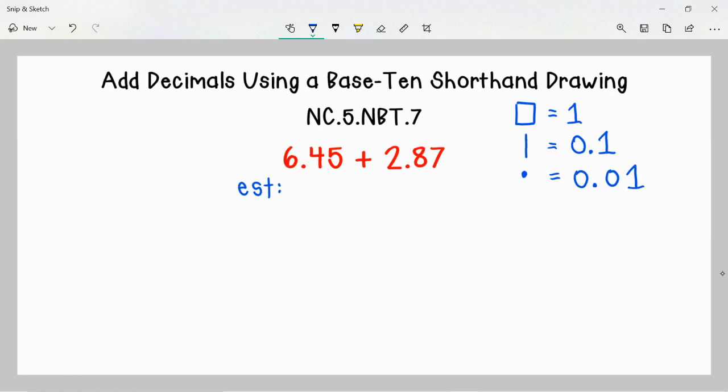We have 6.45. I'm going to round that to the nearest whole number since that would be friendly for me. You certainly could round it in a different way, but we will round this to 6. And 2.87, I know that is close to 3. And 6 plus 3 would be 9. So this lets me know that our final answer should be around 9.